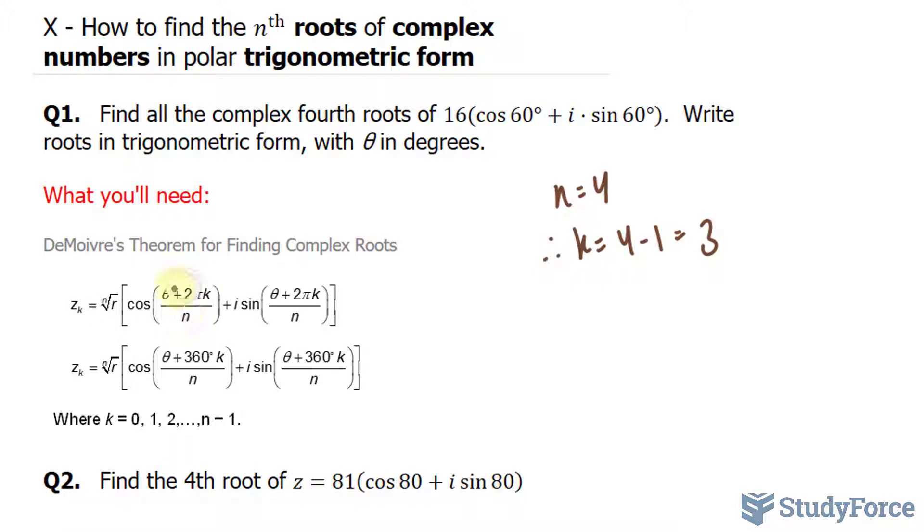k will serve as a factor for the angles. Let's find what z₀ is. Our n value is 4, and our radius is 16. Square bracket, cosine, and our angle is θ, which in our case is 60, plus 360 times 0, over 4.